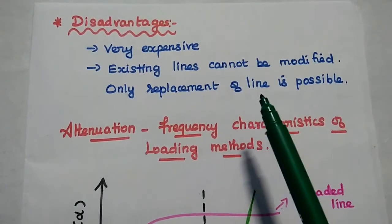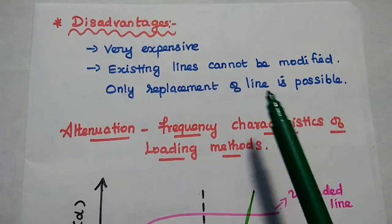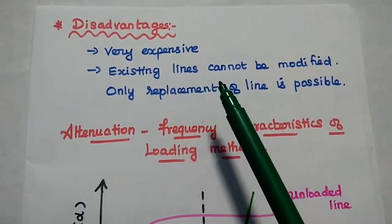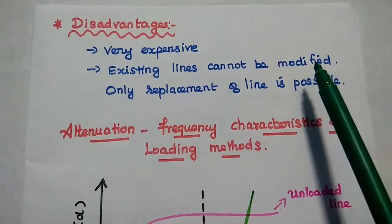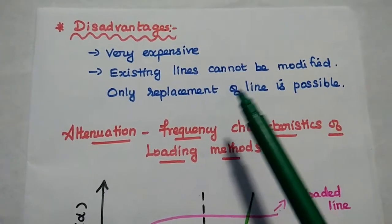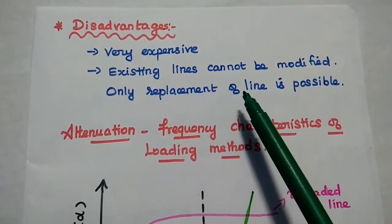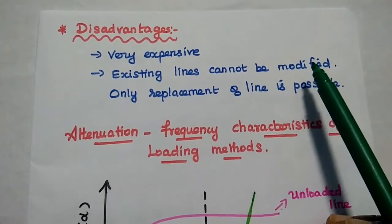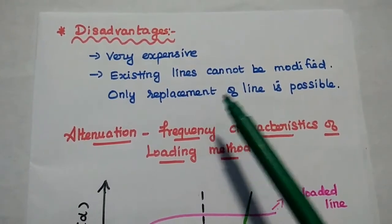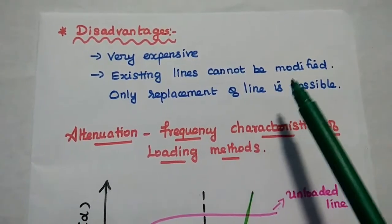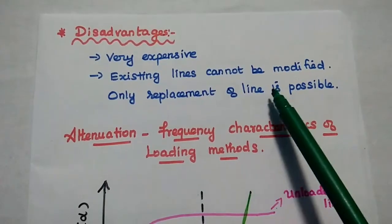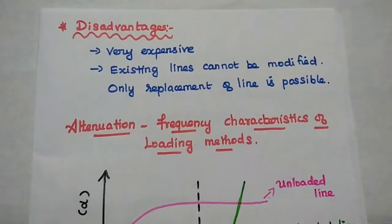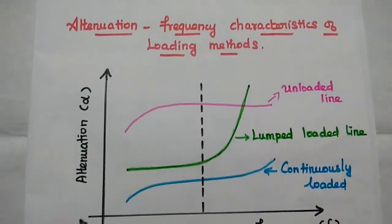The disadvantages of the continuous loading method are: it is a very expensive method, and existing lines cannot be modified. Instead, we have to replace the line entirely. This high cost is the major disadvantage of the continuous loading method.